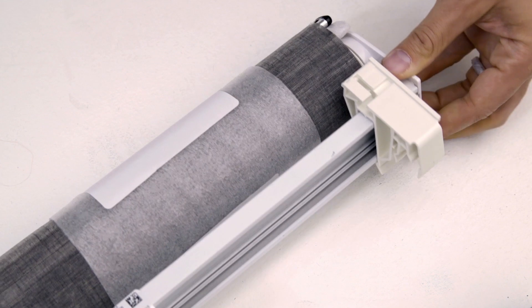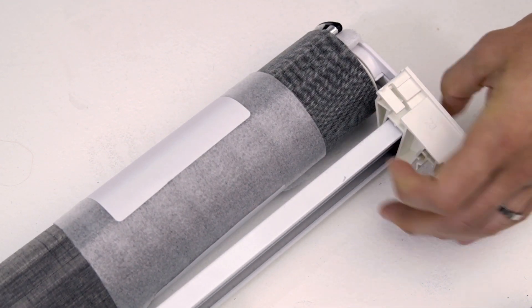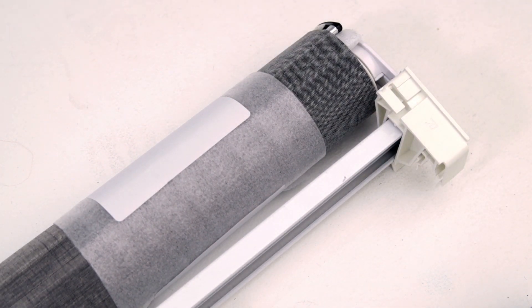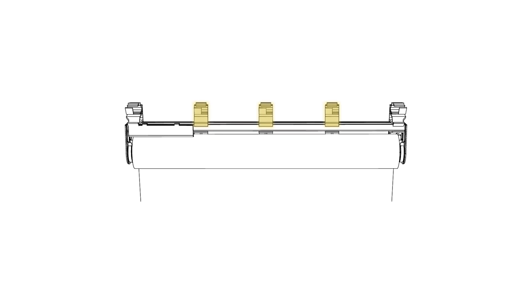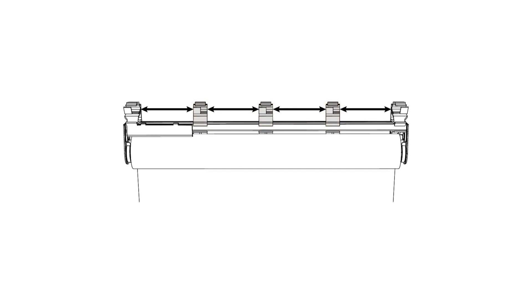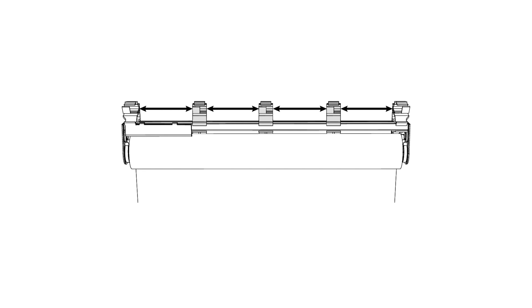Position the support brackets by pushing them all the way to each end of the shade. Shades over 53 inches wide will include up to three additional center fascia supports. Position any necessary center supports evenly across the shade, adjusting their position if necessary to avoid mounting rail screws.